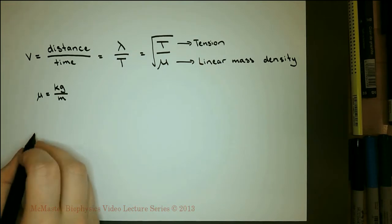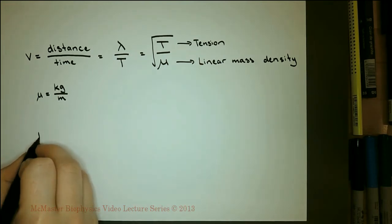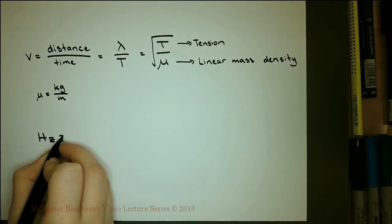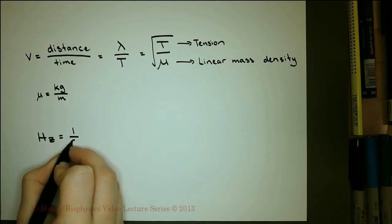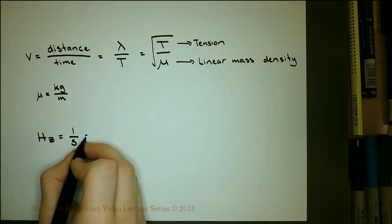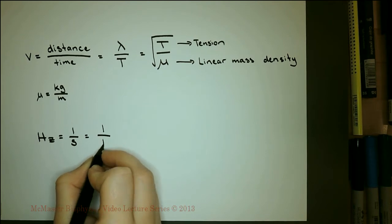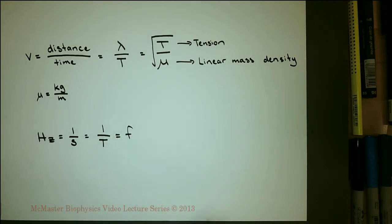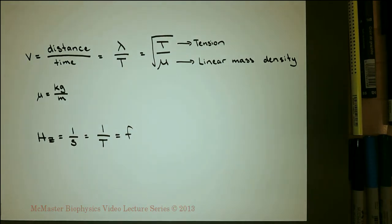For calculations, note that frequency is in units of hertz. Hertz are equal to per second and can be calculated using one over the period. For example, the frequency of a tuning fork at concert A is 440 hertz, which means it oscillates 440 times per second.